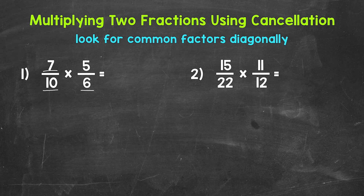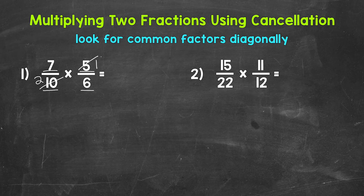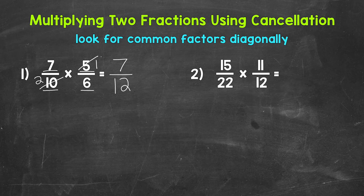Now let's take a look at the 10 and the 5. Are there any common factors other than 1 between 10 and 5? Yes, 5 is a common factor, and it happens to be the greatest common factor. So let's divide 10 and 5 by 5. 10 divided by 5 gives us 2, and 5 divided by 5 gives us 1. Now we have a simpler problem. Let's multiply straight across: 7 times 1 is 7, and 2 times 6 gives us 12. So 7 twelfths is our final answer, and it is in simplest form.